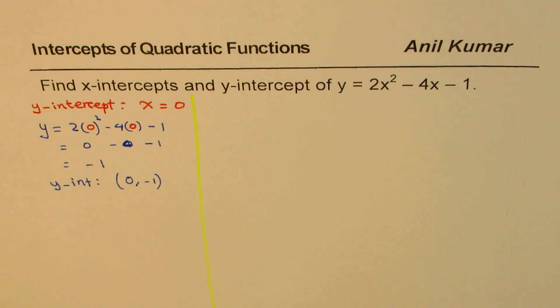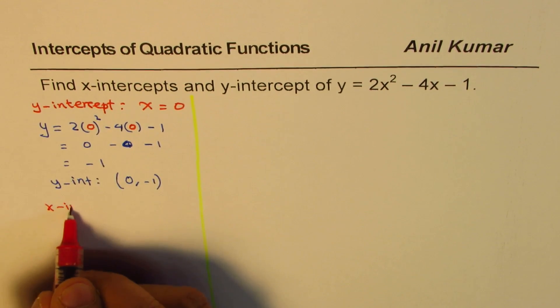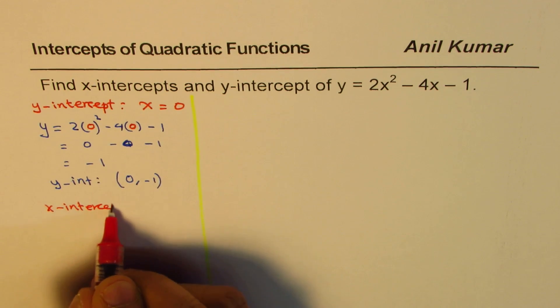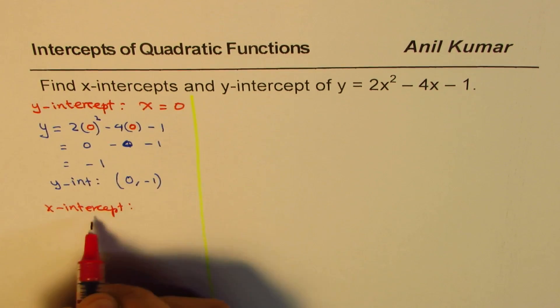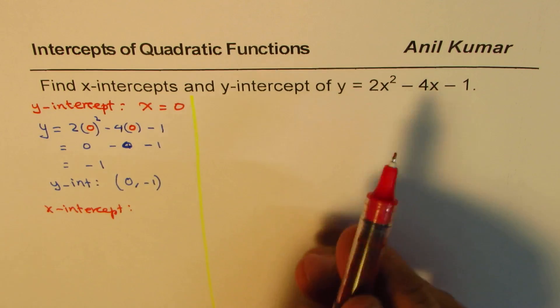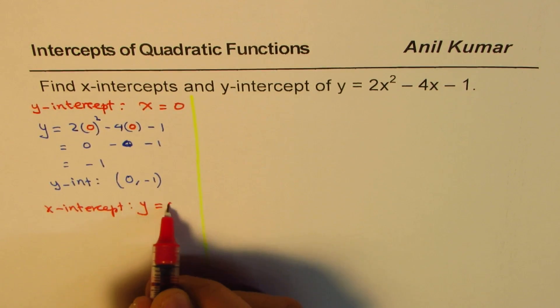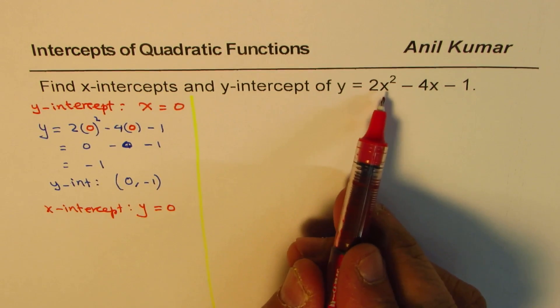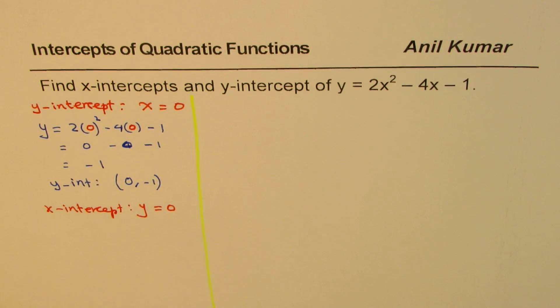Now when the equation is given in standard form, x-intercept could be very tricky. Now what is x-intercept? Let's try to understand that first. x-intercept is a point where the graph crosses x-axis. At that point, y is equal to 0. So we have to substitute 0 for y.